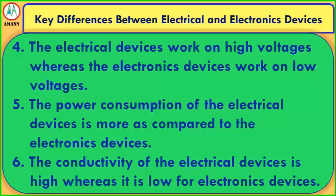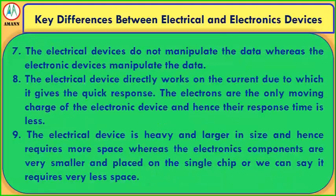The power consumption of electrical devices is more compared to electronic devices. The connectivity of electrical devices is high whereas it is low for electronic devices. Electrical devices do not manipulate data whereas electronic devices manipulate data. Electrical devices directly work on current and give a quick response, whereas electrons are the only moving charge in electronic devices and hence their response time is slower. Electrical devices are heavy and large in size, whereas electronic components are very small and placed on a single chip, requiring very little space.